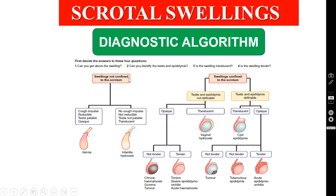Suppose if the swelling is not confined to the Scrotum - it is an Inguino-Scrotal Swelling - and the patient is also having Cough Impulse, the swelling is reducible, Testis is palpable separately, and it is an opaque swelling, then we are dealing with a case of Hernia. Suppose the swelling is not confined to the Scrotum but no Cough Impulse, it is not reducible, Testis is not palpable separately, and it is transilluminant - that means it is Infantile Hydrocele, where you cannot make out the upper border because it extends up to the internal ring level. It mimics a hernia but it is not reducible with no Cough Impulse.